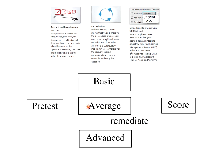Each branch can have remediation. So if they pretested as average but once they started working in there they seem to have some trouble, you can set it up with remediation that will help them out as they're working through it. At the very end, you can use SCORM as one of the output formats, and that will report scores out. If you have an LMS especially, you don't have to touch the grading — you can let the computer do all the scoring.